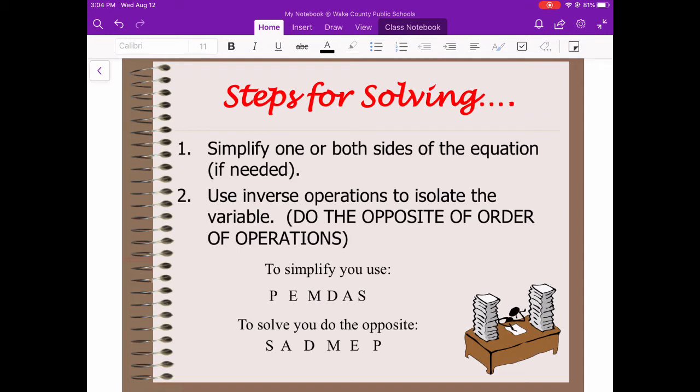So we've got to make sure when we're solving, we do the reverse of that. Addition and subtraction we will get rid of first, then we would get rid of multiplication and division, then we would get rid of exponents, and then we would get rid of parentheses. So in a lot of ways, we work backwards.